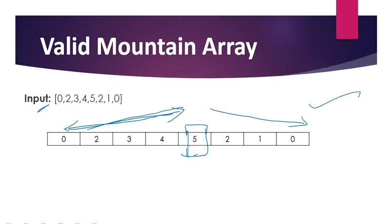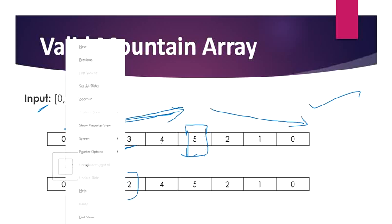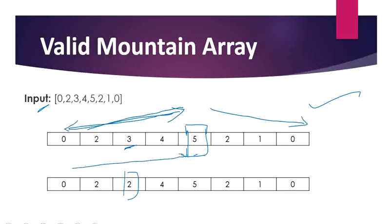Now with a slightly modified example — instead of 3 we have updated the value to 2 — the graph doesn't go strictly increasing; it goes to 2, stays at the same level, and then goes up. After 5 it is decreasing, so this is not a valid mountain array.